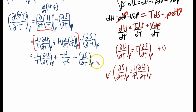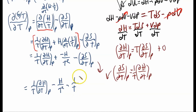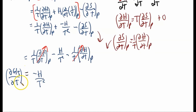Now we substitute that back into our expression. We have 1 over T times partial H over partial T at constant pressure, minus H over T squared, minus 1 over T times partial H over partial T at constant pressure. These two terms are equal and opposite — one positive, one negative — so they cancel out. We're left with negative H over T squared on the right, and on the left: partial of G over T with respect to temperature at constant pressure. This is our Gibbs-Helmholtz equation.